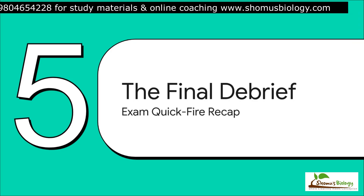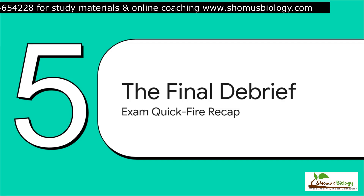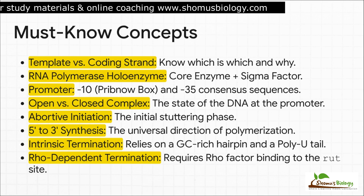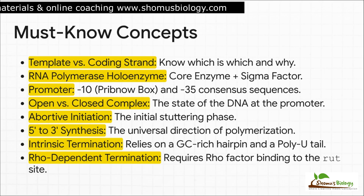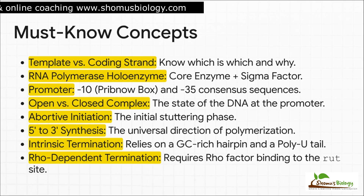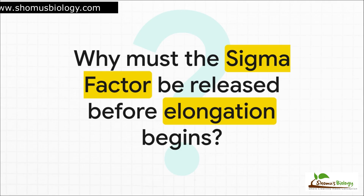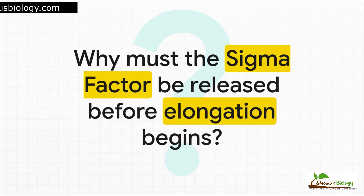Let's do a final rapid-fire debrief — these are the absolute must-know concepts you need locked down, especially for your exams. The template strand is read 3-prime to 5-prime; the coding strand is what the RNA looks like. The holoenzyme is the complete machine: core plus sigma. The promoter has key signals at negative 10 and negative 35. The complex starts closed, then opens when the DNA melts. Abortive initiation is that stutter start. Synthesis is always 5-prime to 3-prime. And termination is either intrinsic with the hairpin, or Rho-dependent. This slide right here is your study checklist. And here's one final question to think about: the sigma factor is essential for finding the starting line, but for elongation to happen it has to be released. What does releasing the sigma factor tell us about the massive conformational change RNA polymerase has to undergo, transforming from a stationary machine locked onto a promoter into a high-speed engine cruising down the DNA? Thanks for joining this explainer.